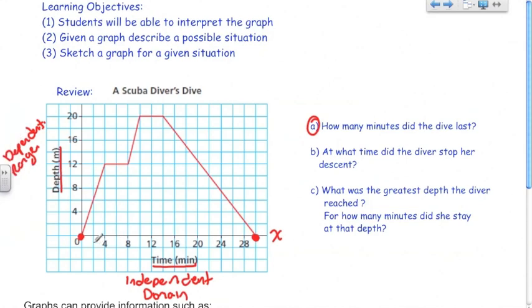If we look at the scale that they've used, here we have every second line is 4 minutes. So that makes every line in increments of 2 minutes. This would be 0, 2, 4, 6, 8, 10, and we continue that all the way up to 26 and 30. So therefore, how many minutes did the dive last? 30 minutes.